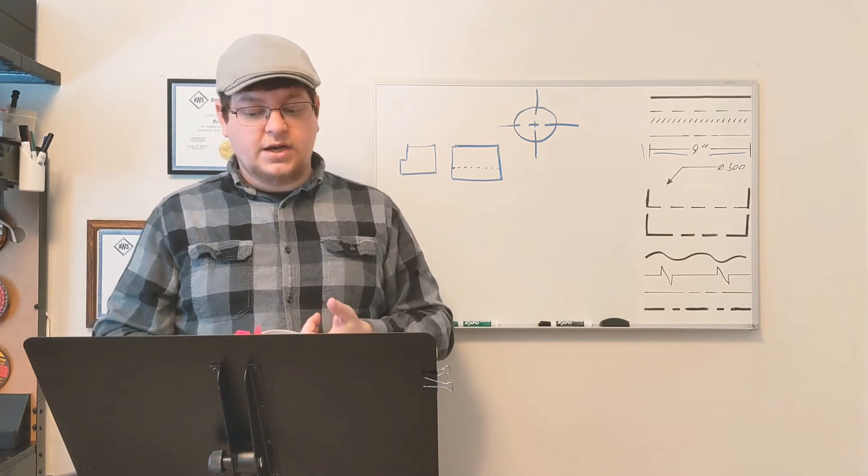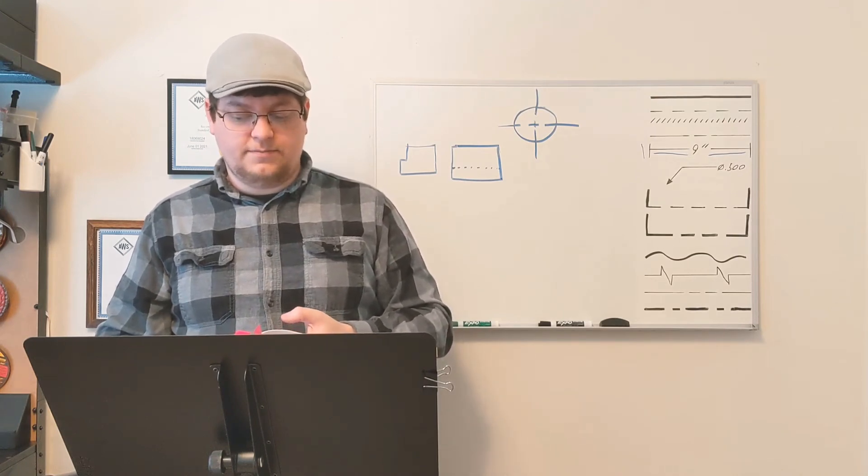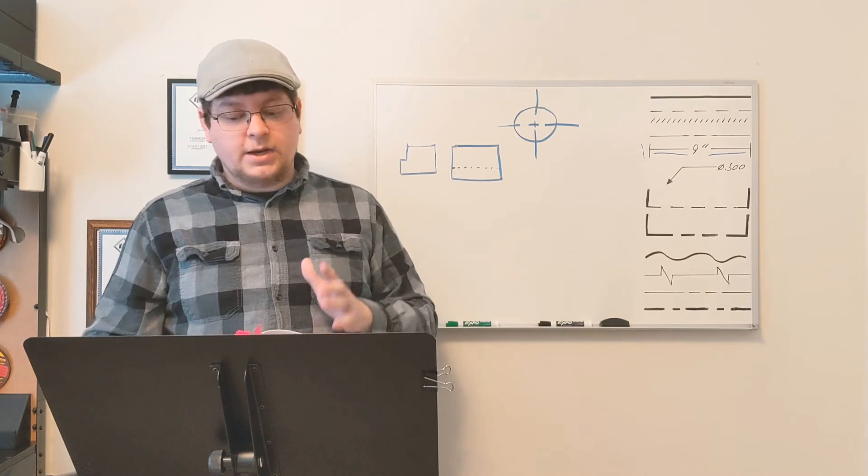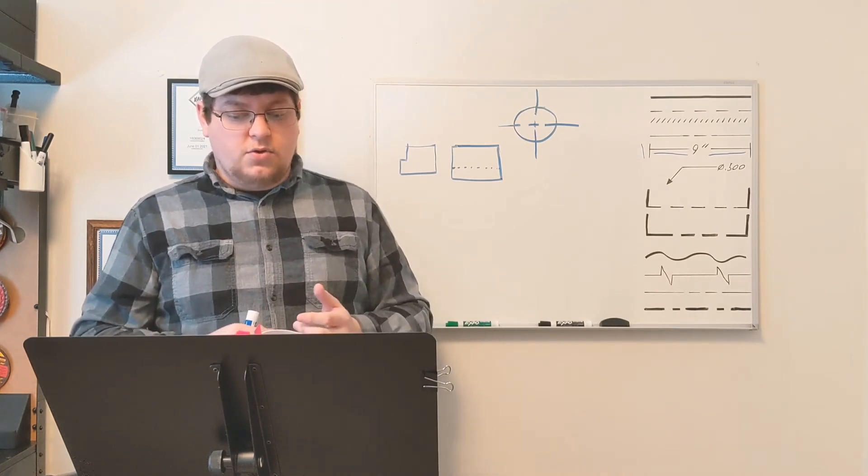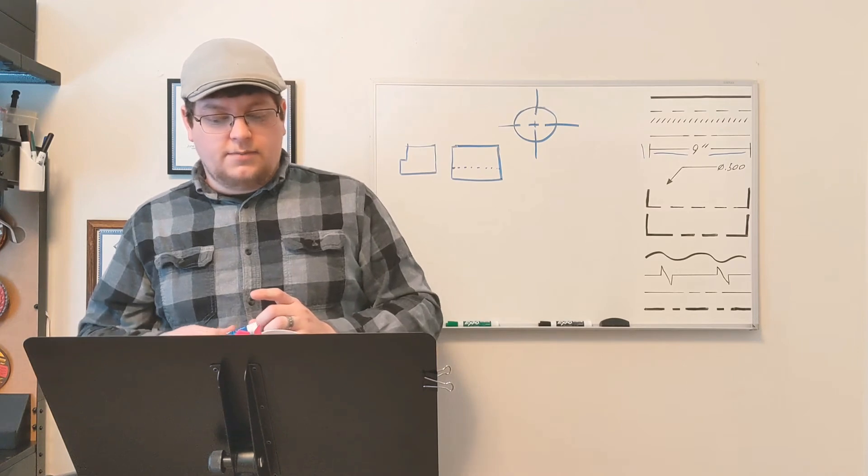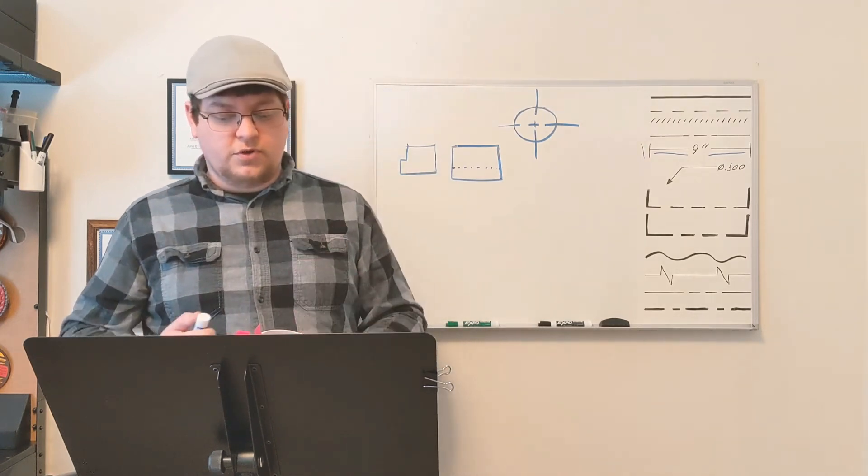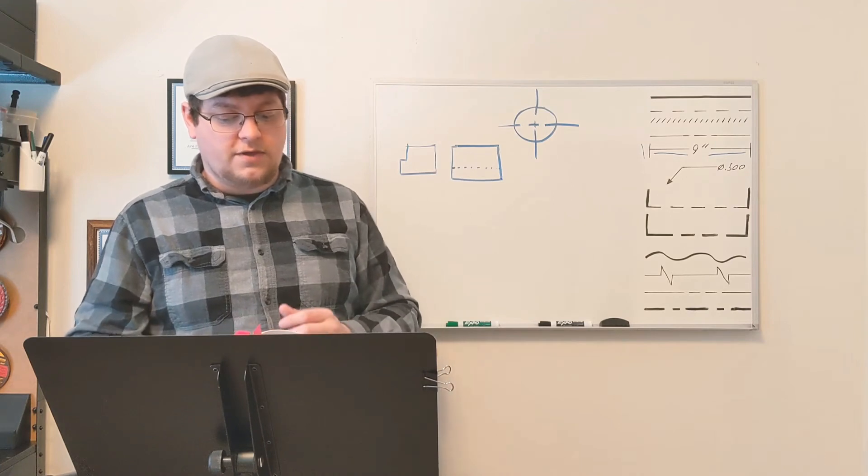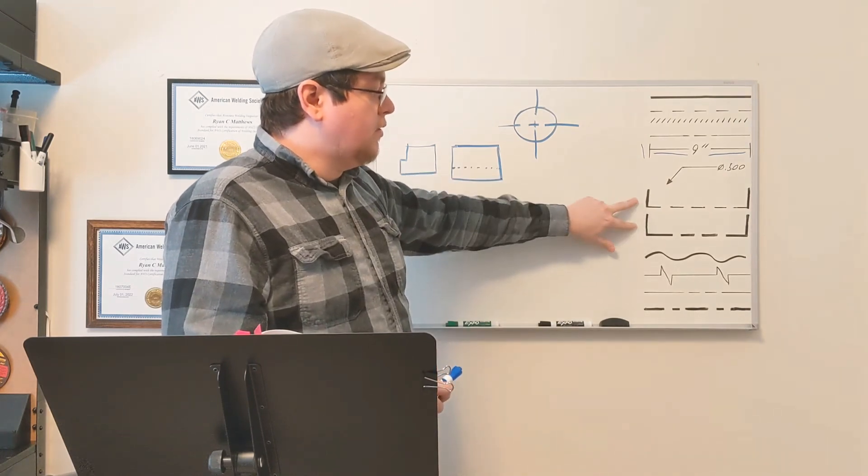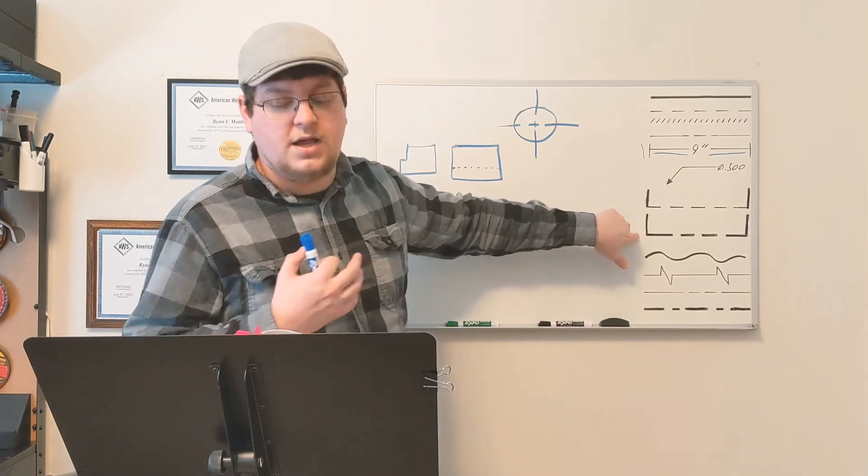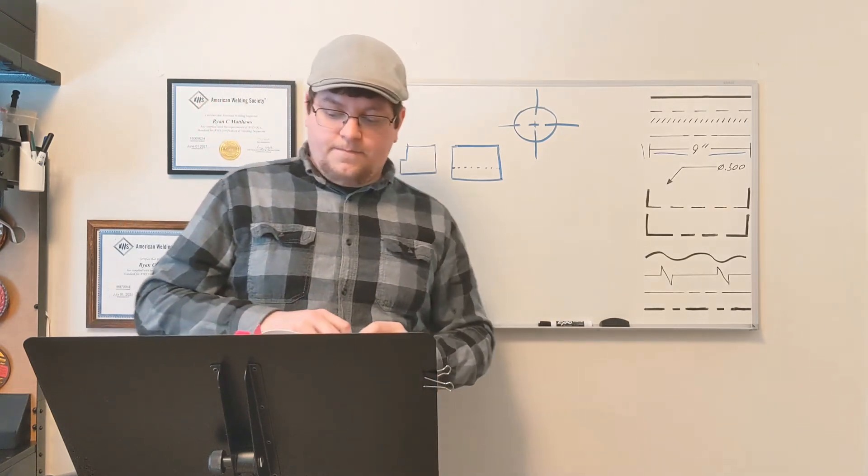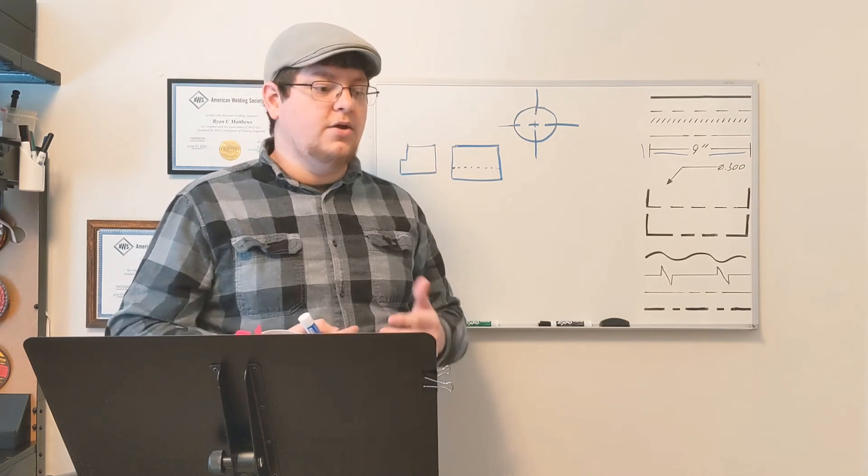The next two is a cutting plane line and a viewing plane line. Now, that's these two right here. The cutting plane line shows where an imaginary cutting takes place to create a sectional view. The next one is a viewing plane line, which is in conjunction with a removed view to show where the view could normally appear. The thing about them is that typically you can switch them. Someone might use this as a cutting plane line or someone might be using this as a viewing plane line.